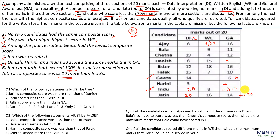Since Jatin is 10 more than Indoo, Indoo's composite score would be 60. Indoo also scores 100% in one section. By hit and trial: if Indoo scores 100% in DI, that gives 40, plus 8 English, equaling 48, and x would be 12 — but that's not possible since x must be greater than 14.